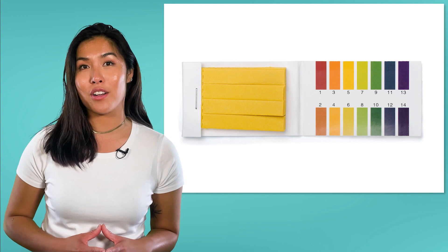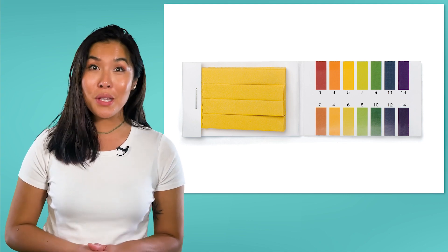How can we determine the pH of a solution or even whether a solution is an acid or a base? We can use indicators. There are many different types of chemical indicators. Two common ones are litmus paper and the liquid indicator bromothymol blue.